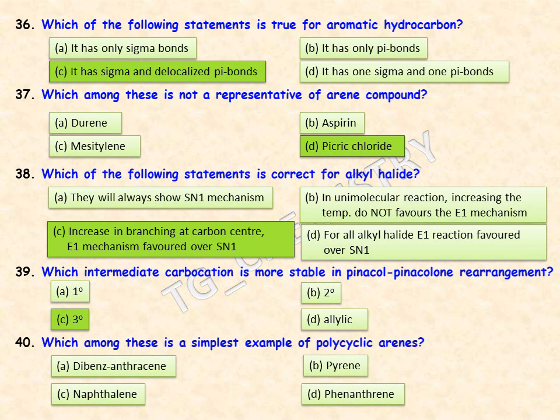Which among these is the simplest example of a polycyclic arene? Options are biphenyl, anthracene, pyrene, naphthalene, and phenanthrene. Naphthalene — having only two rings — is the simplest polycyclic arene, so option C (naphthalene) is the right answer.